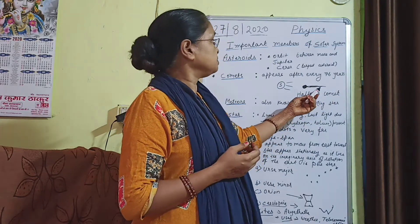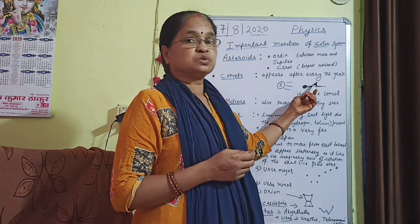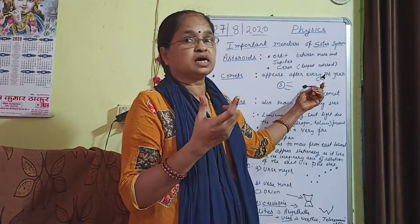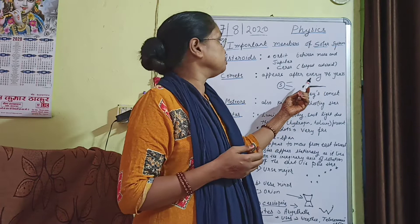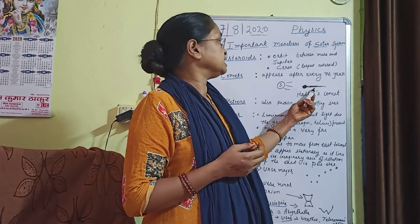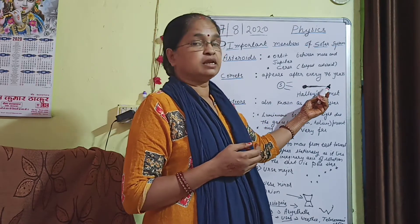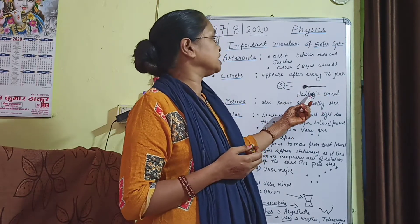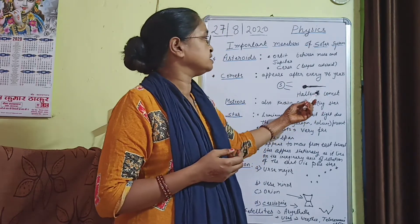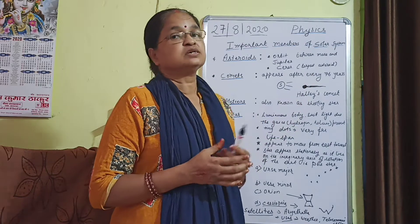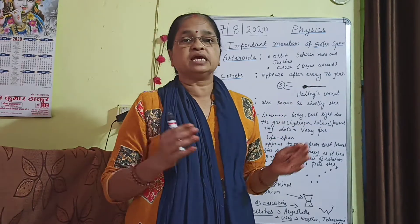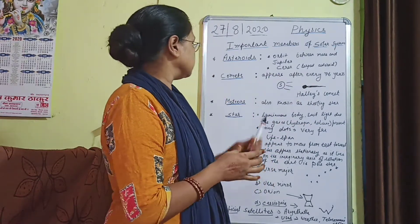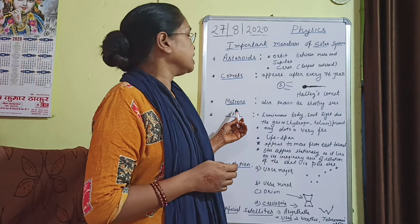Sometimes it is also known as Puchal Tara — a star with a tail. This name given by scientists is Halley's Comet. It appears after every 76 years.